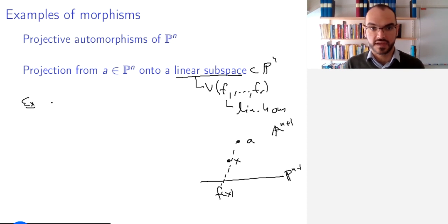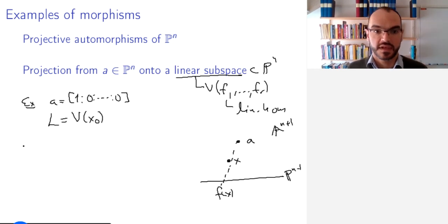if I take as my A the point (1,0,...,0), and as my L the vanishing set of x₀, then I want to send a point (x₀,...,xₙ) to the same point, so 0, but forgetting, setting the first coordinate equal to 0. So the usual what you would expect from projection.